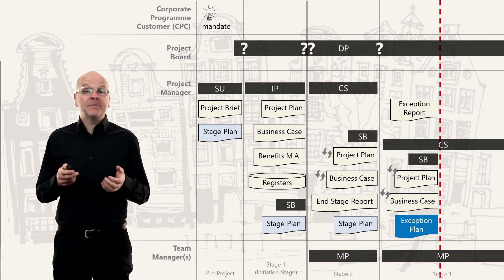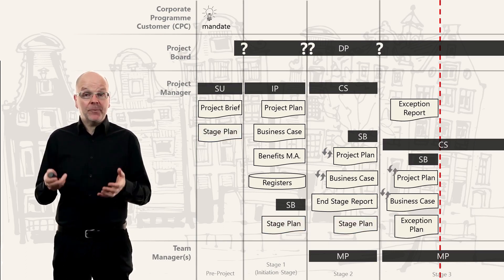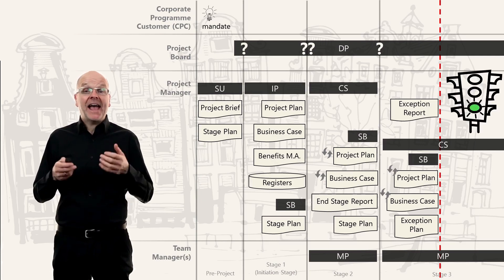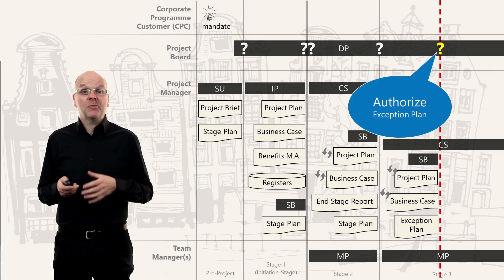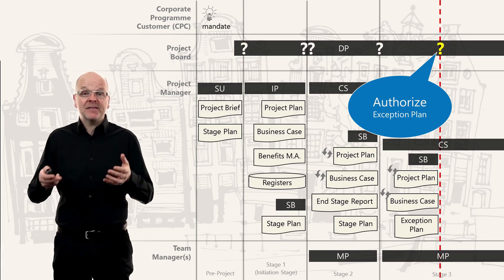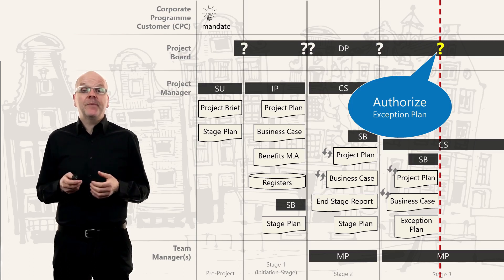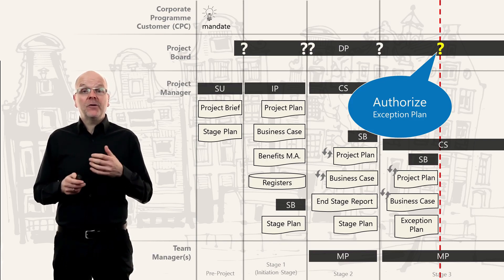Once the exception plan is complete, the project manager asks the project board: can we complete the stage? The project board considers this request and makes a decision called 'Authorize an Exception Plan.' This basically says you can continue with the stage, and the project manager will use the exception plan to complete the current stage.